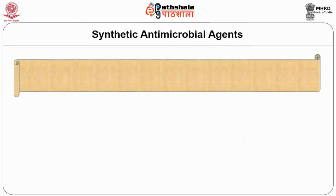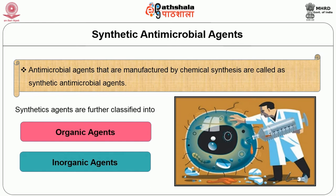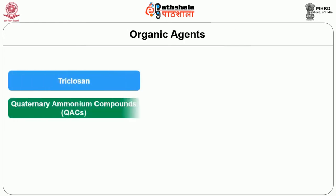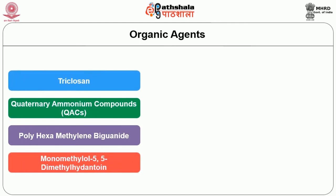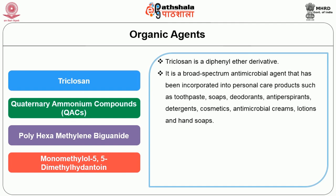Antimicrobial agents manufactured by chemical synthesis are called synthetic antimicrobial agents. These are further classified into organic and inorganic agents. Many organic compounds are used as antimicrobial agents including drugs and chemotherapeutic agents. The first example is triclosan, a diphenyl ether derivative. It is a broad spectrum antimicrobial agent incorporated into personal care products such as toothpaste, soaps, deodorants, antiperspirants, detergents, cosmetics, antimicrobial creams, lotions and hand soaps.